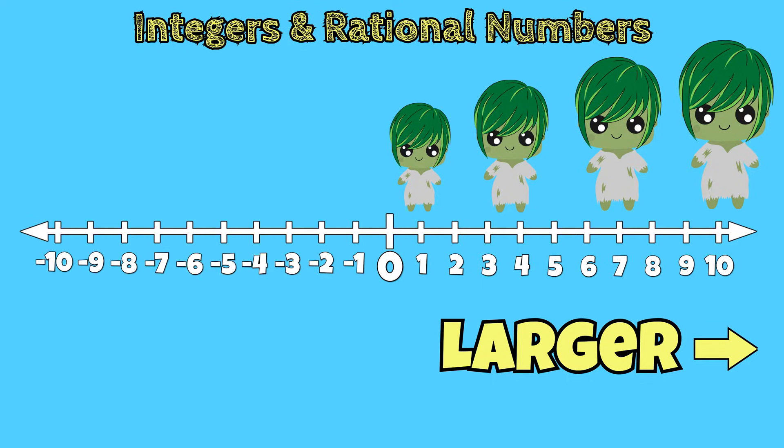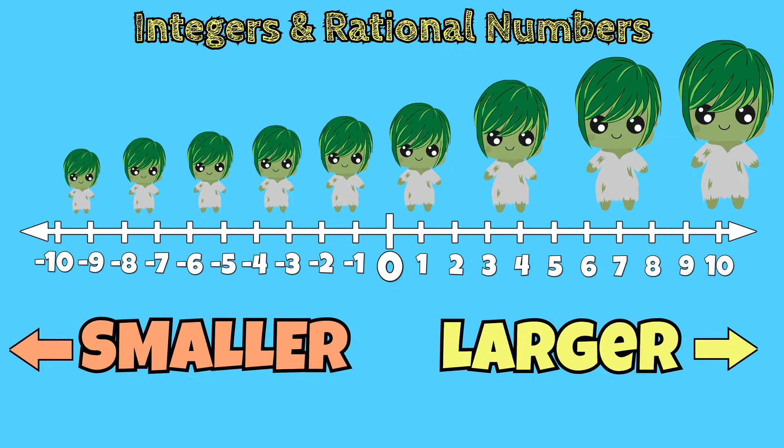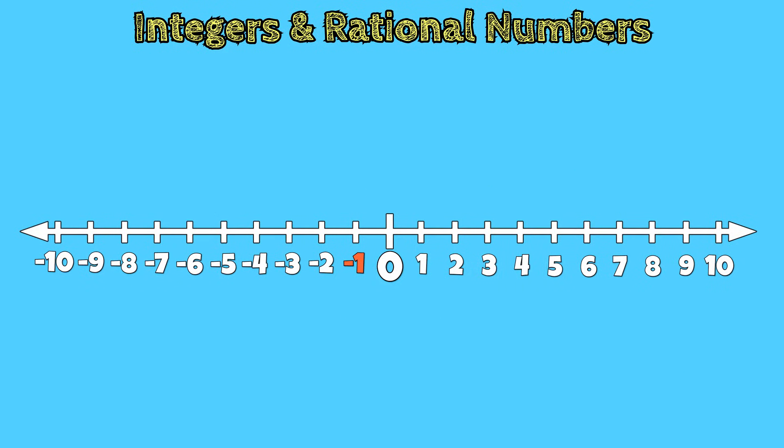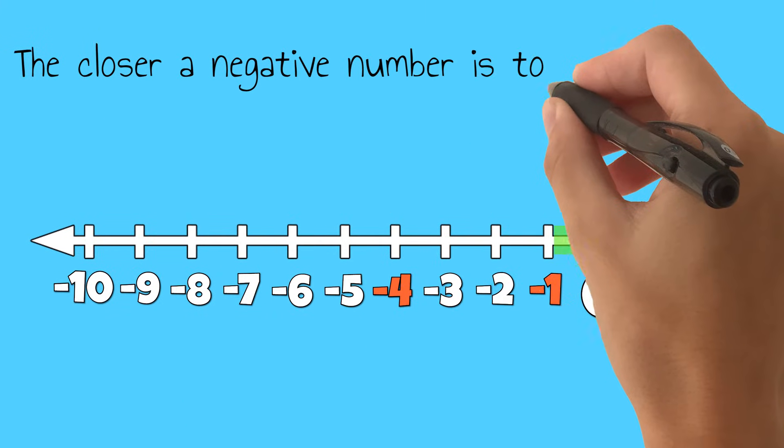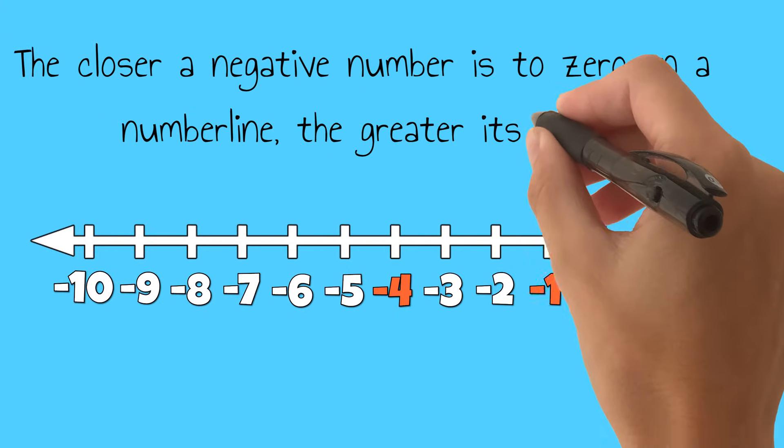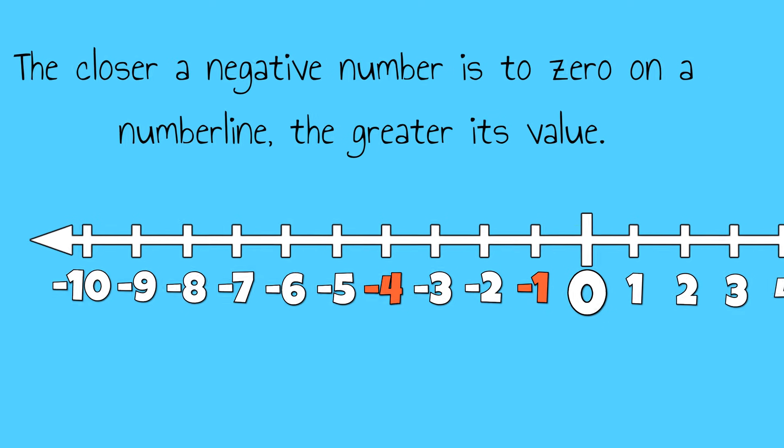As we move to the left of zero, we have negative numbers that are also counting but that become infinitely smaller in value. For example, negative one is greater in value than negative four. The closer a negative number is to zero on a number line, the greater its value.